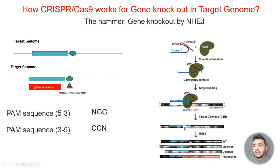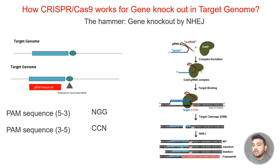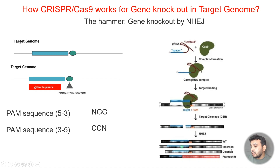When there is a double-stranded break in the DNA, in the next cycle when the DNA automatically repairs itself, there will be an insertion, deletion, or frameshift. Whenever there is an insertion, deletion, or frameshift in a protein, we can use this feature to knock out any gene or protein. This disrupts the overall structure of that protein, resulting in dysregulation, and we can check the effect of these indels on the phenotype.